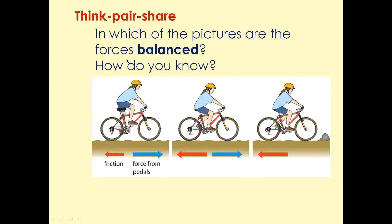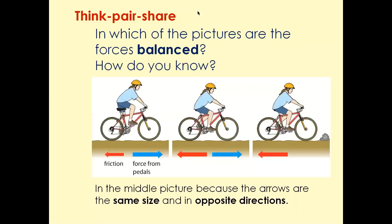Looking at this question — we've got three different pictures. In which picture are the forces balanced? The forces are balanced in the middle picture because the arrows are the same length, meaning the magnitude is the same, and they are pointing in opposite directions. That means they cancel each other out, so the forces are balanced.